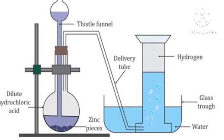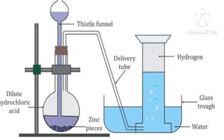To prepare hydrogen gas in the laboratory, granulated zinc is placed in a flask. Dilute hydrochloric acid is added into the flask through a thistle funnel. The acid and zinc react with each other, producing hydrogen gas, which passes through a delivery tube and is collected by the downward displacement of water.